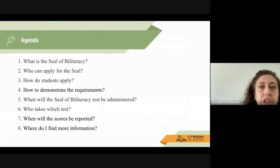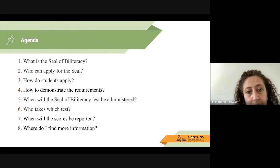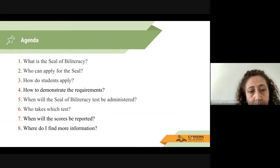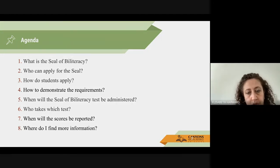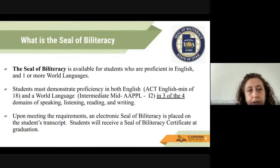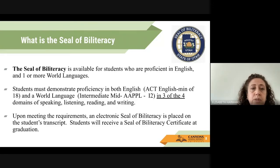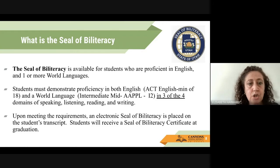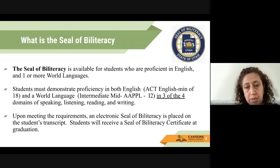Today's agenda will cover: what is the Seal of Biliteracy, who can apply, how do students apply, how to demonstrate the requirements, when will the test be administered, who takes which test, when will scores be reported, and where to find more information. The Seal of Biliteracy is available for students who are proficient in English and in one or more world languages. It is very common that students apply for two Seals of Biliteracy — this is totally fine.